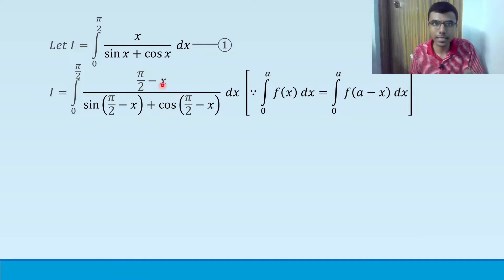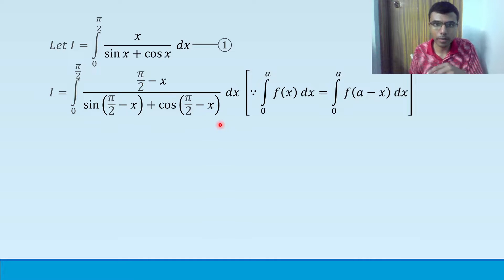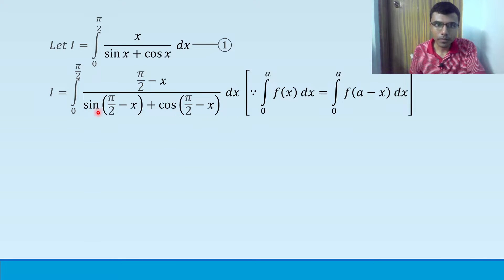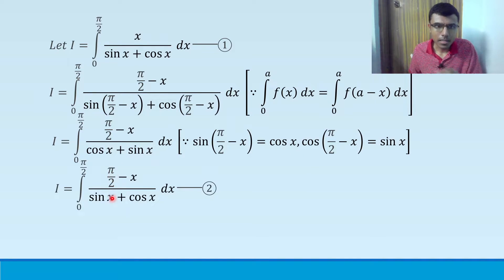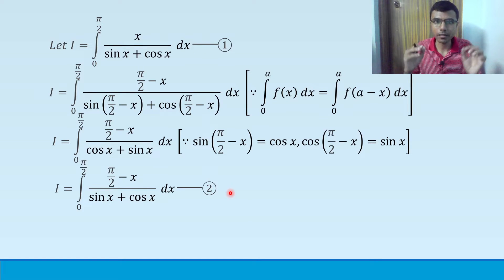Wherever you see x — in the numerator x becomes π/2 − x, sin x becomes sin(π/2 − x), and cos x becomes cos(π/2 − x). Now sin(π/2 − x) is nothing but cos x, and cos(π/2 − x) is nothing but sin x — basic trigonometry. Reversing the terms in the denominator, cos x + sin x is written as sin x + cos x. Mark this as equation 2.